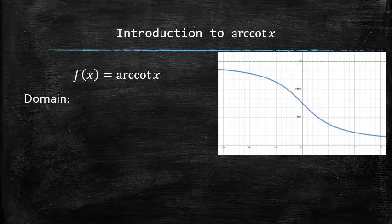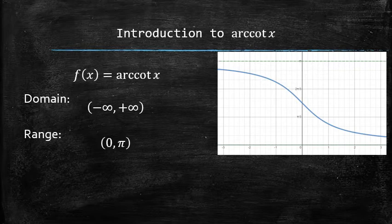The domain of this function is from negative infinity to positive infinity, and the range of this function is from 0 to pi inclusive. We should be able to find the output of this function for any input in the domain using the graph or a calculator. However, the outputs for some nice inputs we should be able to figure out analytically.